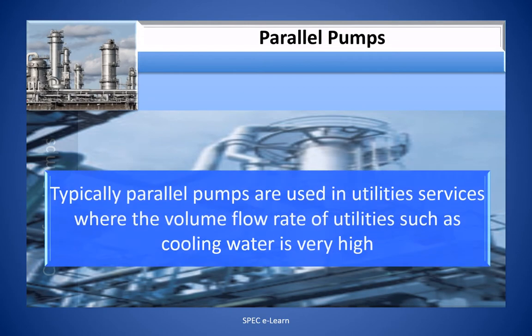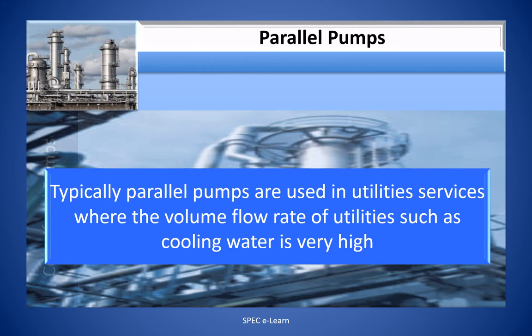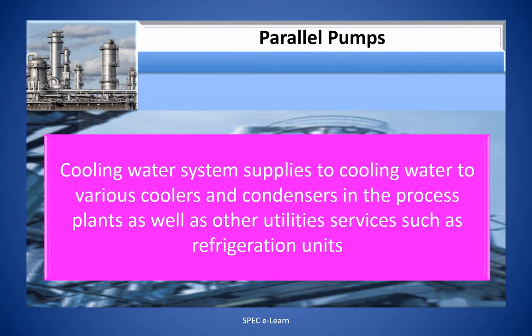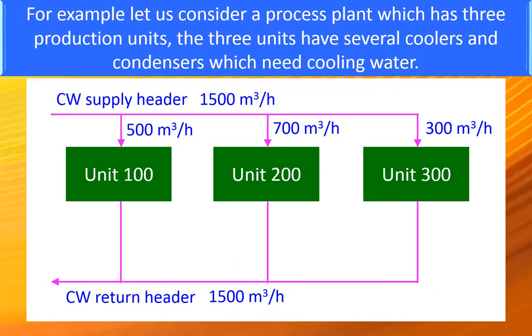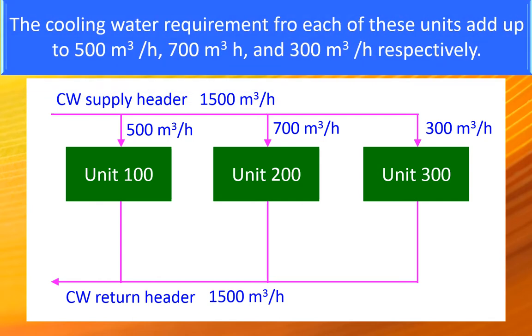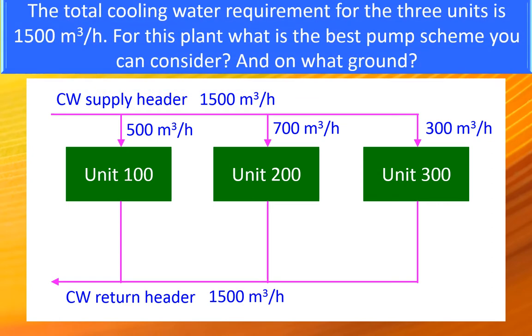Typically, parallel pumps are used in utility services where the volume flow rate of utility such as cooling water is very high. Cooling water system supplies cooling water to various coolers and condensers in the process plants as well as other utility services such as refrigeration units. For example, let us consider a process plant which has three production units. The three units have several coolers and condensers which need cooling water. The cooling water requirement for each of these units add up to 500 cubic meter per hour, 700 cubic meter per hour and 300 cubic meter per hour respectively. The total cooling water requirement for the three units is 1,500 cubic meter per hour.